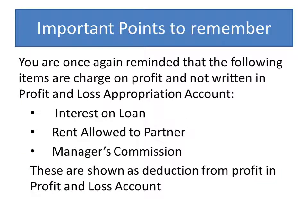And finally, one point to remember: you are reminded that the following items are charged on profit and are not written in P&L appropriation account. These are interest on loan, rent allowed to partner, and manager commission. These are shown as deduction from profit in profit and loss account. So when you make profit and loss appropriation account and these items are given, interest on loan, rent allowed to partner, and manager commission will be separately deducted from profit, either by making P&L account or just subtracting these three items from the profit as given in the question.